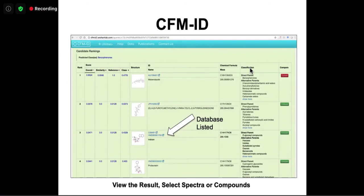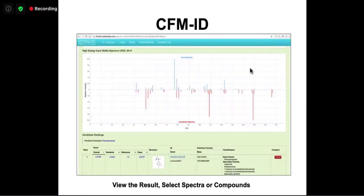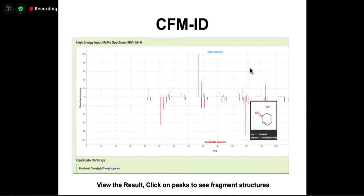CFM-ID takes a few seconds to run and provides a list of matched compounds, overall scores, similarity values, and links to different databases. It provides information about whether spectral data is predicted or known and from which database. You can compare your input spectrum to the predicted spectrum — intensities don't always match, but in mass spectra you never see a perfect match. You can hover over features and it will identify specific fragments.